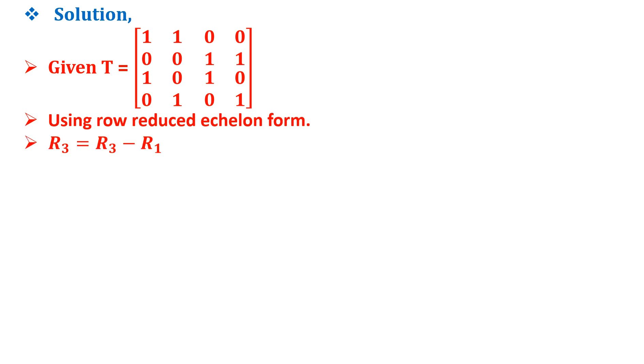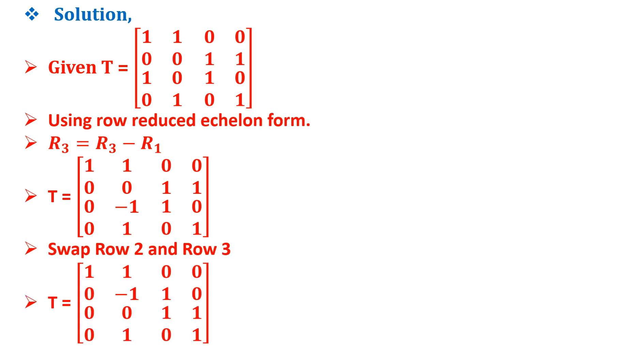first row 3 is equal to row 3 minus row 1 which gives us T as follows. Now we swap the second row and the third row which gives us T as follows.